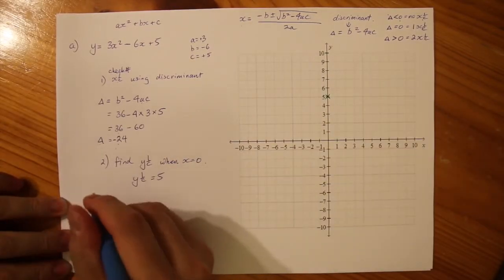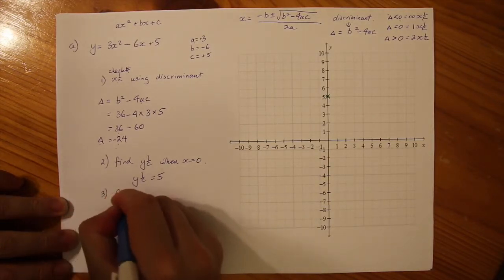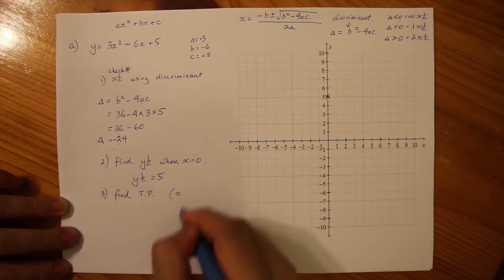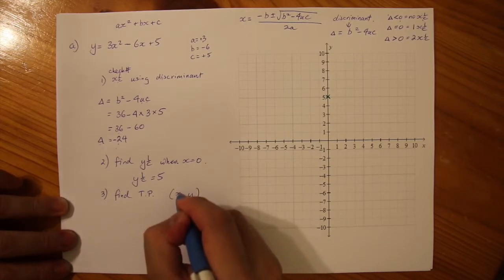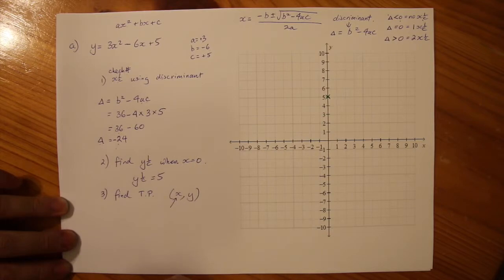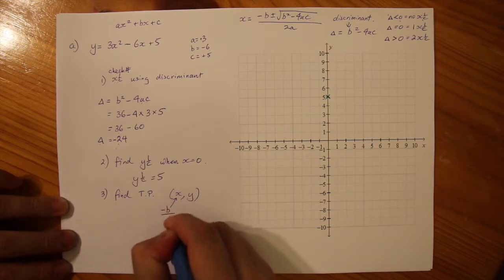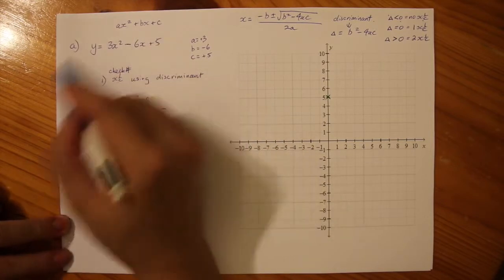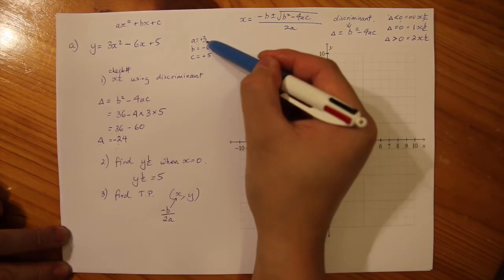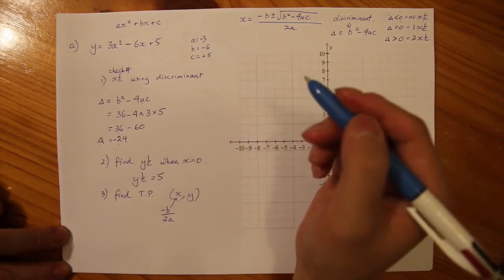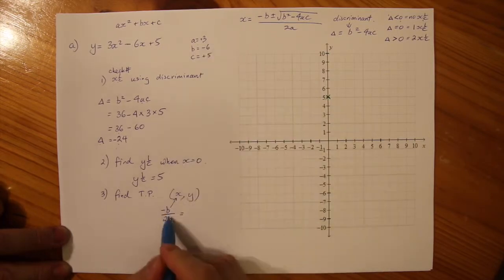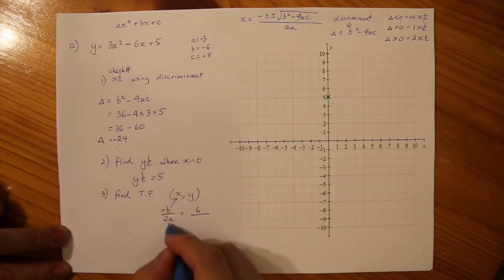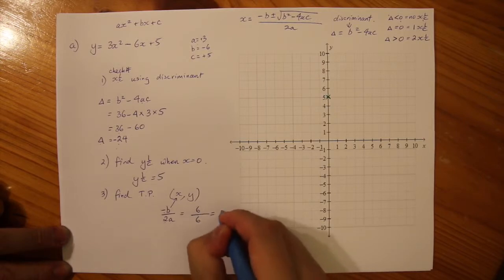The next and final part of sketching is to find the turning point. You need an X coordinate and a Y coordinate. To find the X value of your turning point, use minus B over 2A. B is minus 6, so minus of minus 6 is positive 6. A is 3, so 2 times 3 is 6. 6 divided by 6 is 1, so the X value of our turning point is 1.